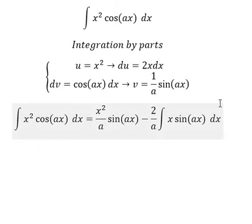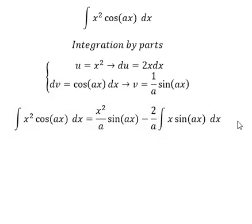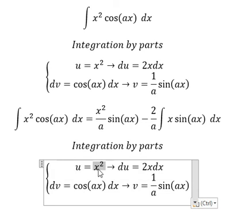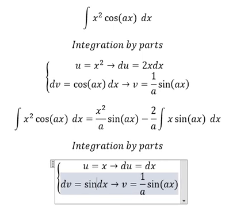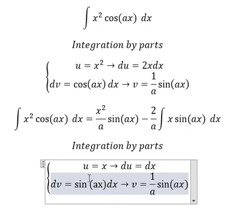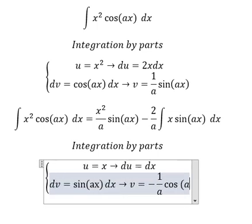Next, we need to use integration by parts again. For this one, u equals x, so du equals dx. And dv equals sine ax dx. The integration of this one gives us v equals negative 1 over a cosine ax.